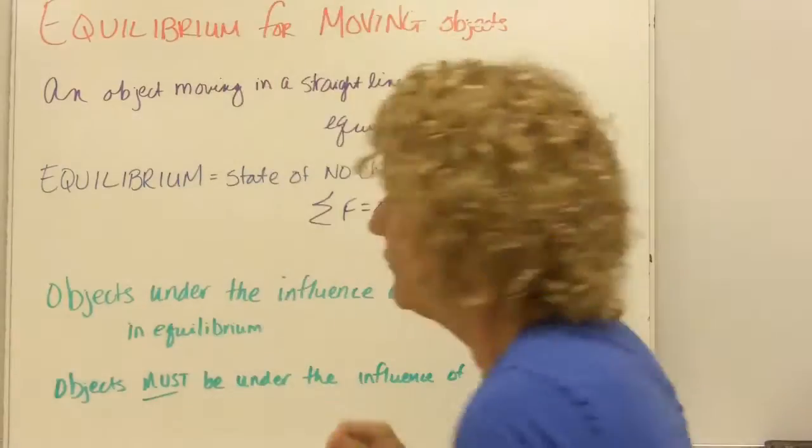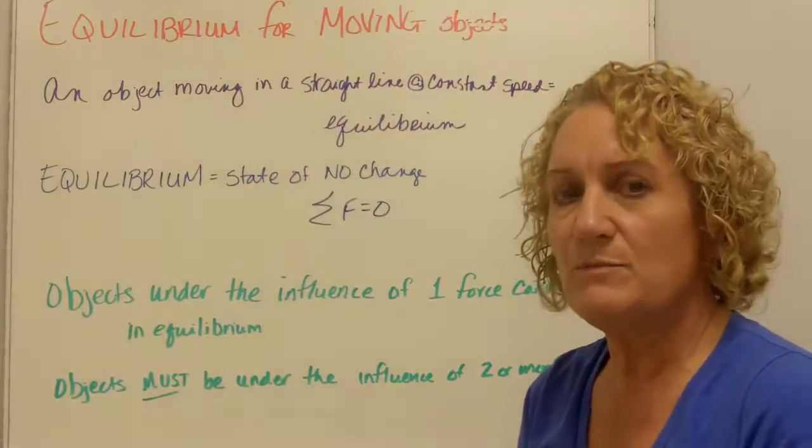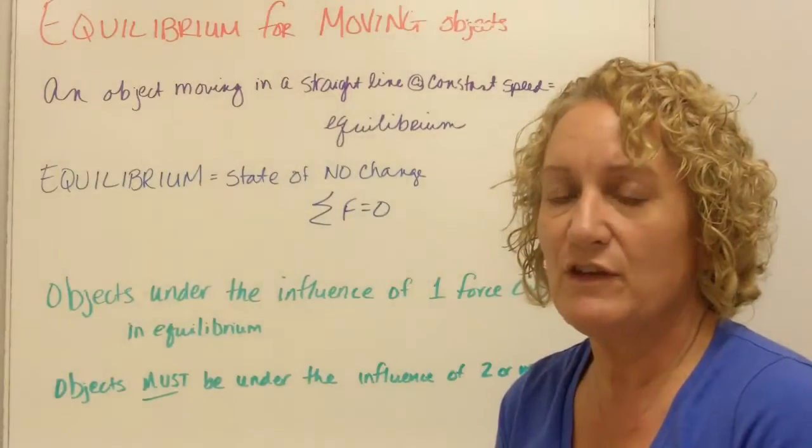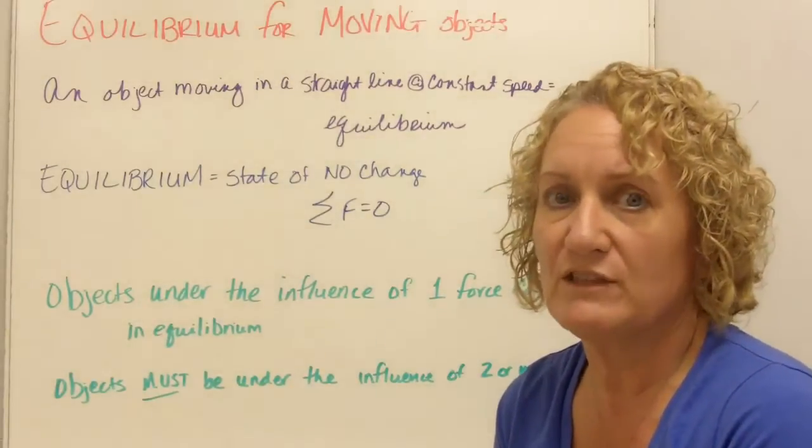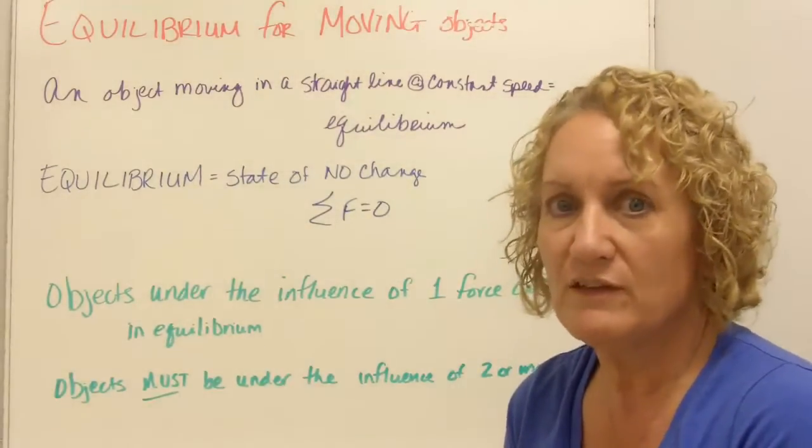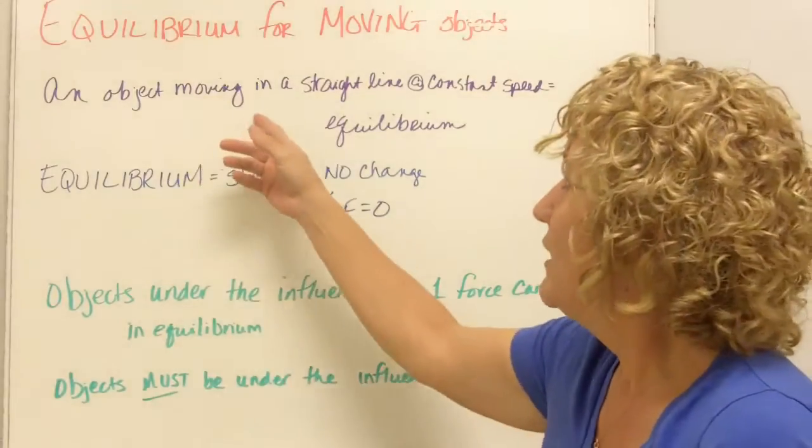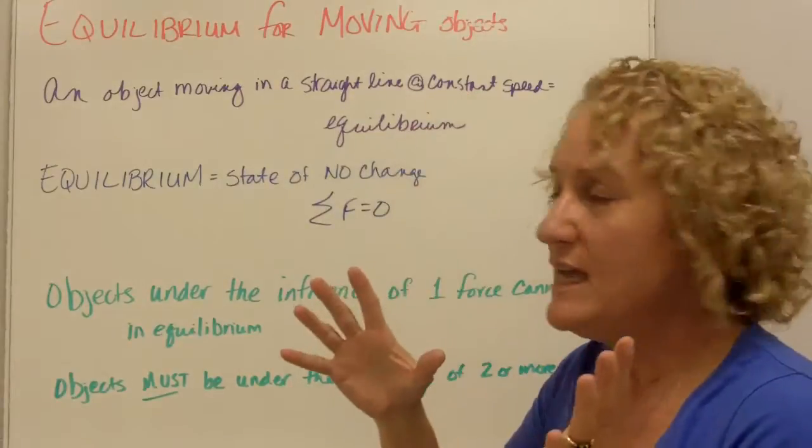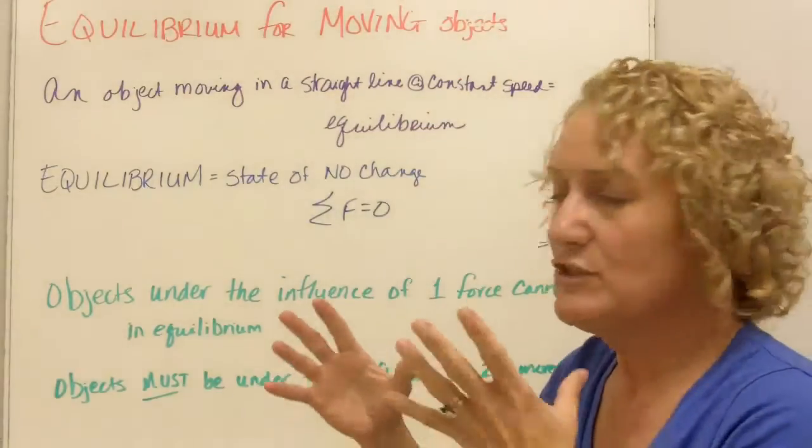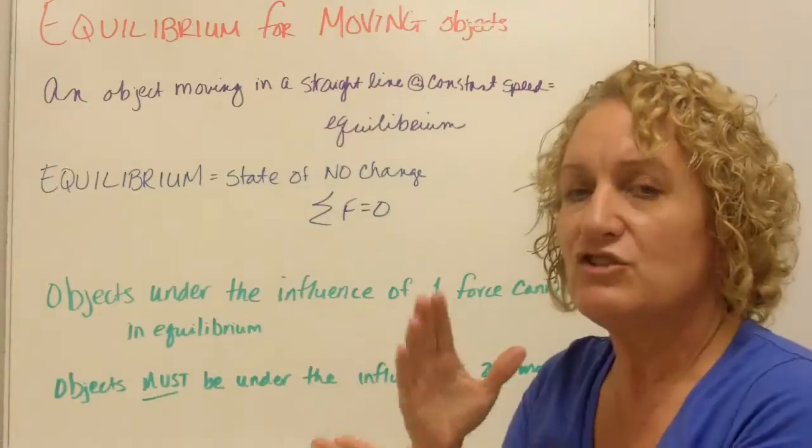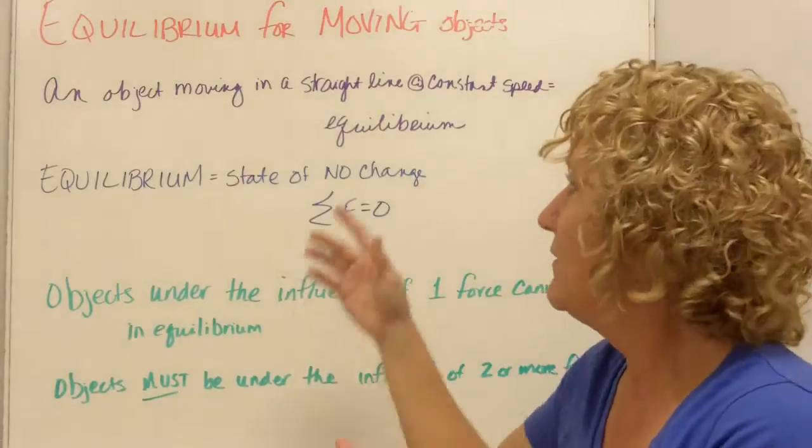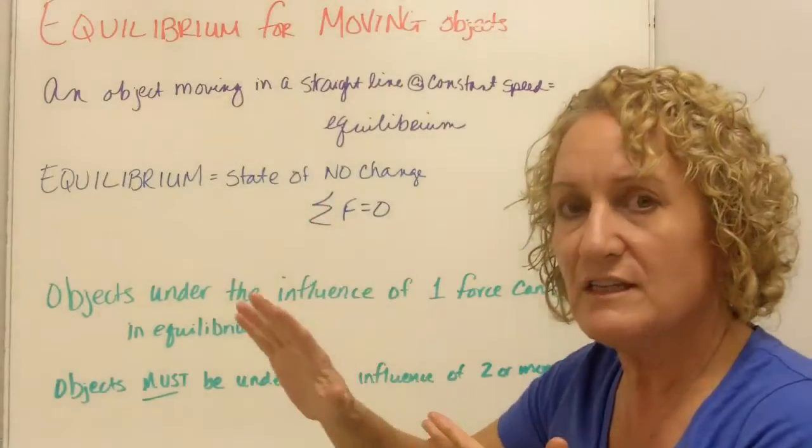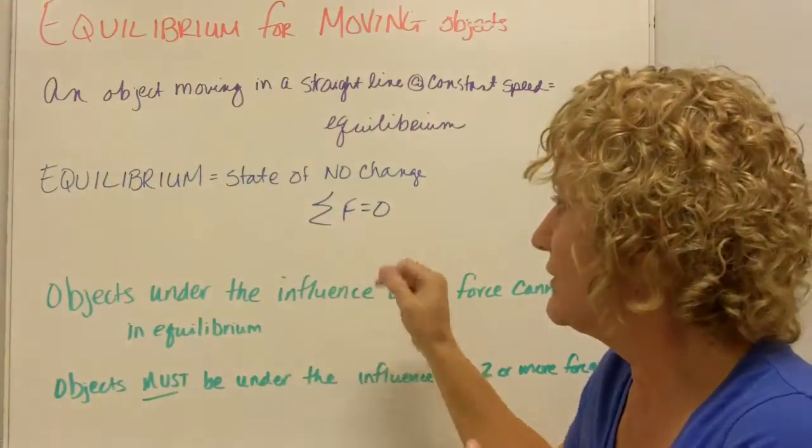All right. Equilibrium for moving objects. Now, remember, I said a few minutes ago that equilibrium meant it was steady, not that it was not moving. You can actually have equilibrium if things are moving. Things can be moving and they're still in equilibrium, because it has to be moving in a straight line and at a constant speed. So it can't be slowing down, speeding up, turning left, turning right. Straight line, constant speed, then it's in equilibrium. Equilibrium is a state of no change. Everything stays the same. The sum of the forces are zero.